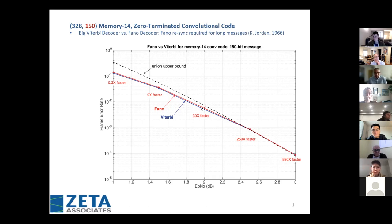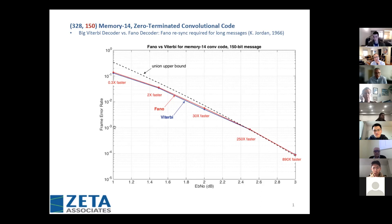What's most interesting, besides the fact that Fano and Viterbi have nearly identical performance, is the speed difference. At 1.5 dB SNR, Fano is two times faster. At 2 dB, it's 30 times faster — not 10, 30. Down at a frame error rate of 10^-3, it's 250 times faster. And at 10^-4, it's about 900 times faster. That really caught my attention.